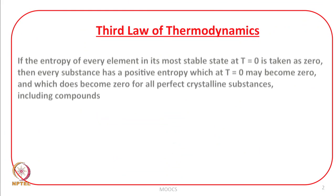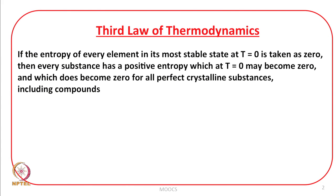So, is it that all substances have entropy at absolute zero equal to zero or not? We will further discuss this in this lecture. Let us look at the formal definition of the third law of thermodynamics. It states that if the entropy of every element in its most stable state at T equal to zero is taken as zero, then every substance has a positive entropy which at T equal to zero may become zero.